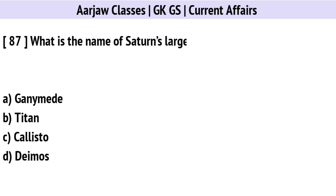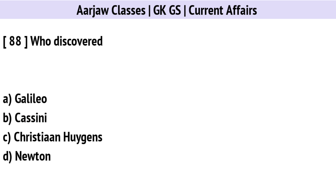What is the name of Saturn's largest moon? Correct option is B: Titan.